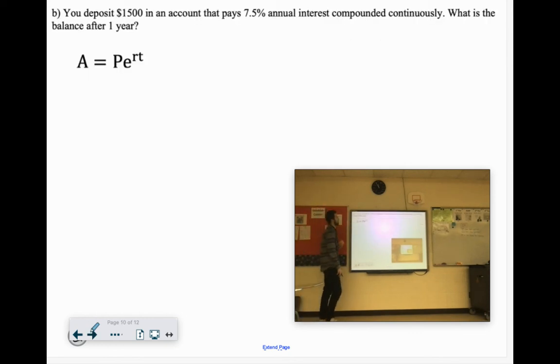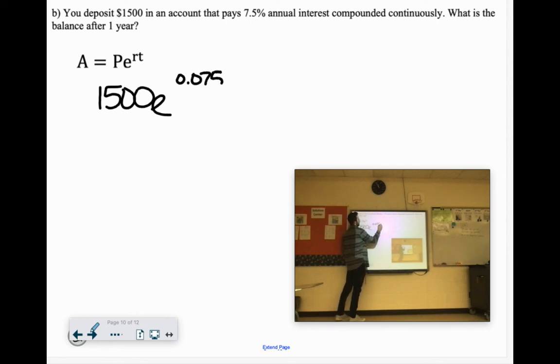You put $15,000 and that calculator pays 7.5% interest compounded with the balance after one year. So 15,000 times e to the 7.5% is 0.075 times 1, 1,500 times e to the 0.075 power. $1,616.83.